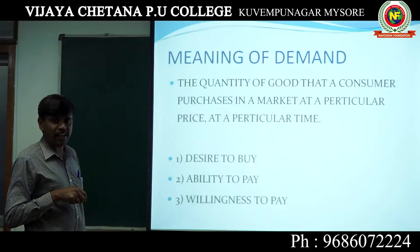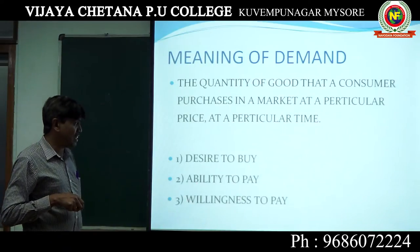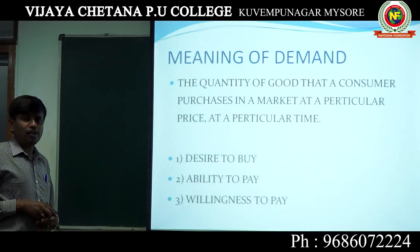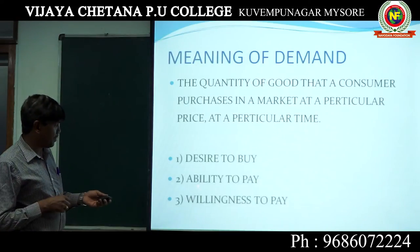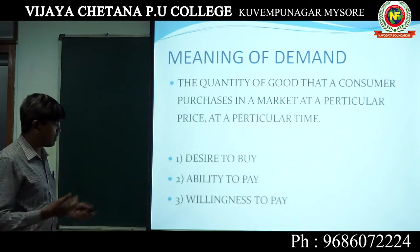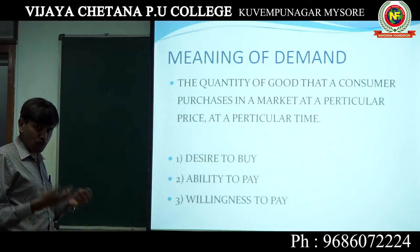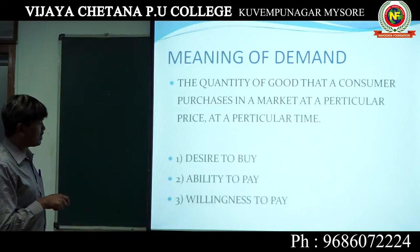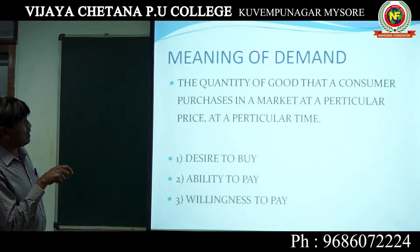One: desire to buy. Second: ability to pay. Third: willingness to pay. Desire to buy means you are going to purchase the good — you should have a desire first. Then ability to pay — you should have some money to pay. Then willingness to pay — you should be willing to buy that particular good at a particular price at a particular time. These three conditions should be fulfilled, then we call it as demand.